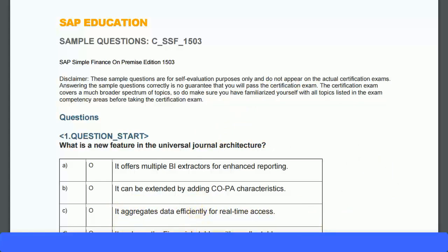Option D — it replaces financial tables with smaller tables — is also incorrect. The tables remain the same size; what happens is that aggregate tables, such as totals tables and some index tables, are removed and replaced with line item tables, specifically the ACDOCA table. So the correct answer is B: it can be extended by adding COPA characteristics.